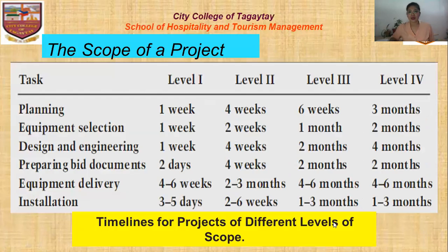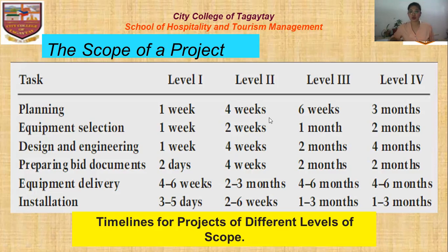Here are the timelines for projects of different levels of scope. For planning: Level 1 is one week, Level 2 is four weeks, Level 3 is six weeks, and Level 4 is three months.